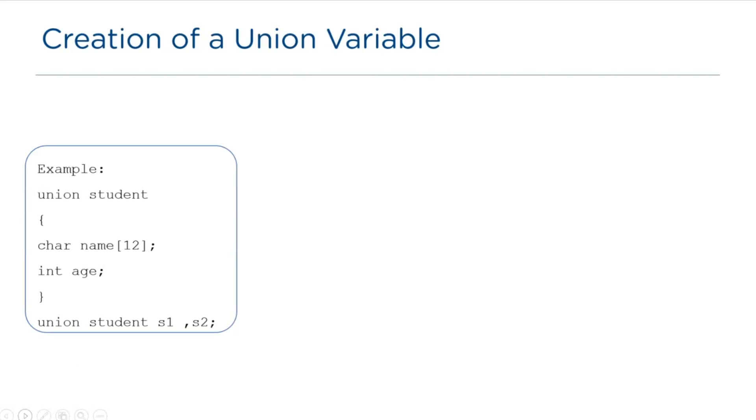Now, let's consider the below given example and understand how the structure in C is different from the unions. As I discussed before, the only difference between structure and union is in terms of memory space. In structures, the memories are allocated separately for every single structure member. In a union, memories are allocated at the same location for all the members of a union. The highest memory space of a member is considered and memories are allocated.